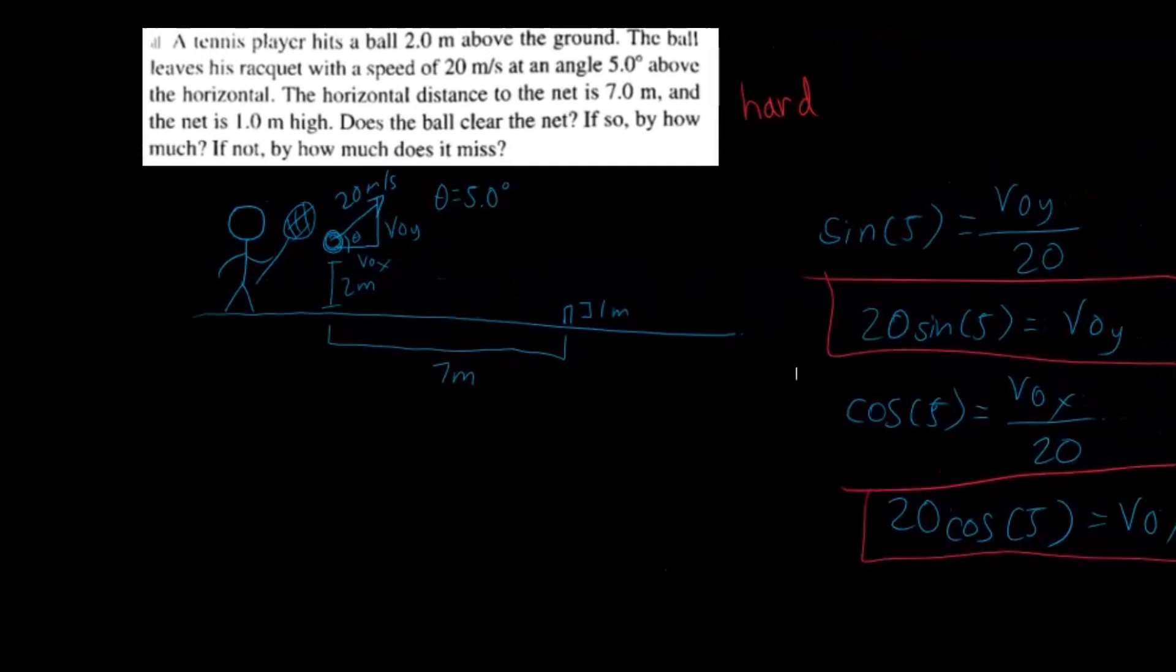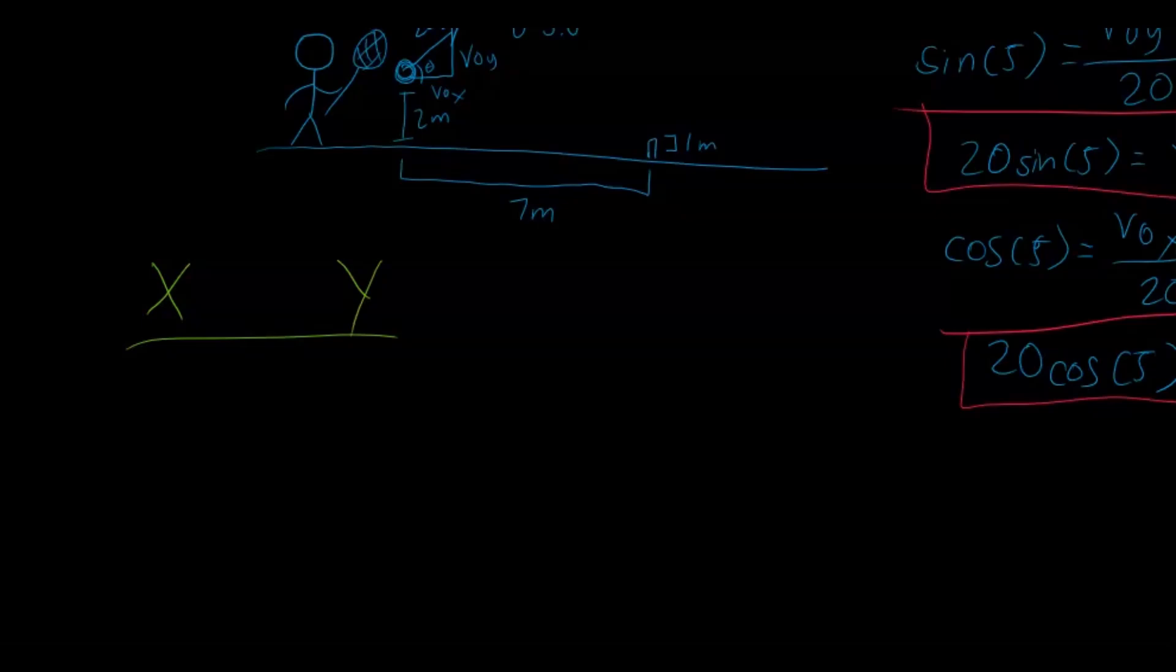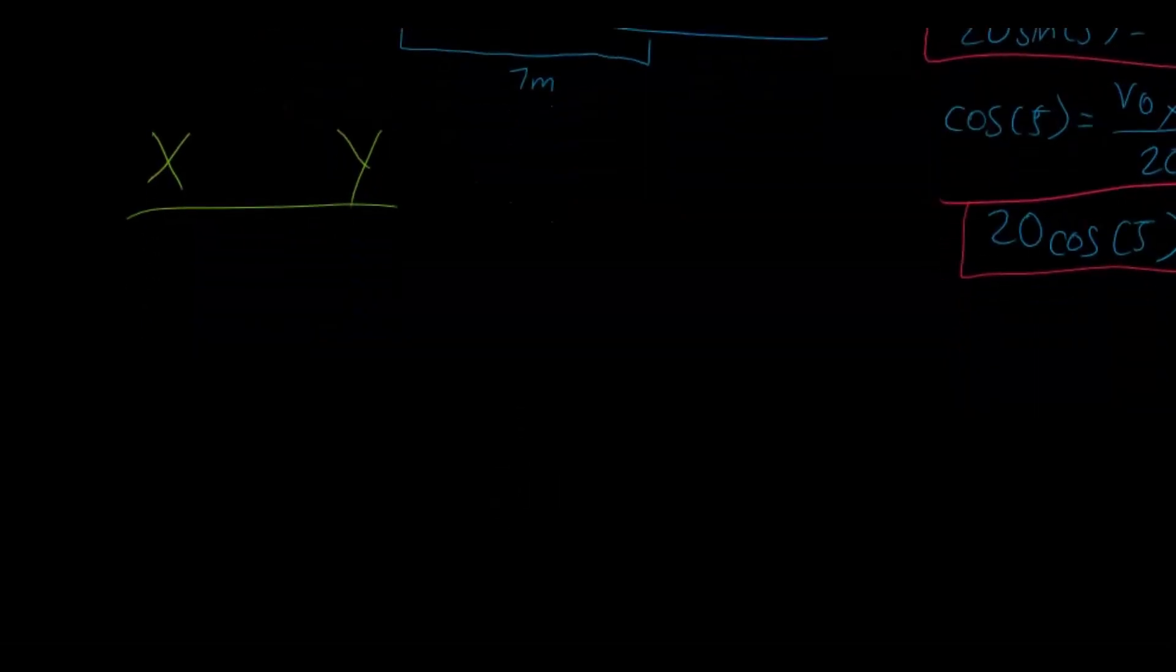And so now we need to actually solve the problem. So the first thing I want to do is find how long it takes to travel that 7 meters. So we don't actually know if the ball is going to make it over the net, right? The net is 1 meter tall. So I just want to find the time it takes because time is the link between the x and y direction. And so if you find the time it takes, then we can calculate the actual height the ball reaches. So what we can do is draw our x and y diagram thing, whatever you want to call it. I'll just scooch down here and label everything we know.